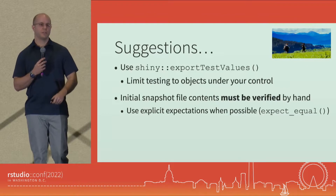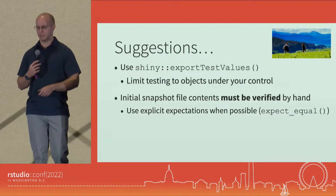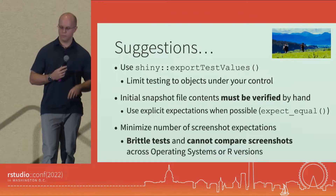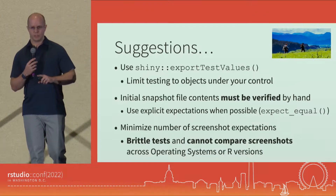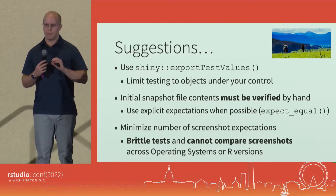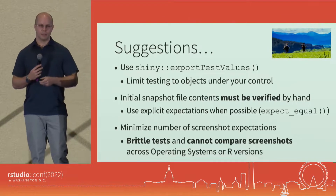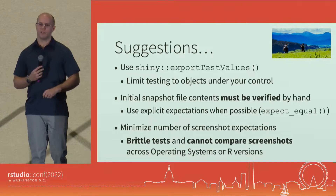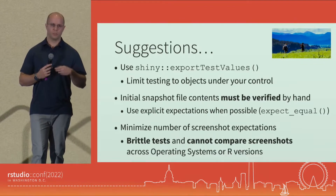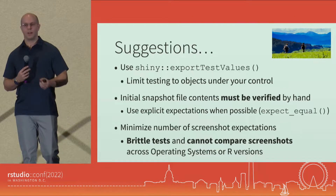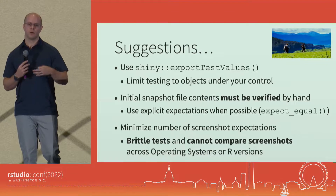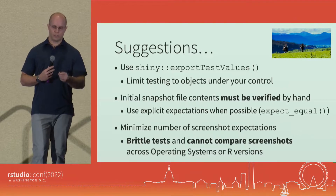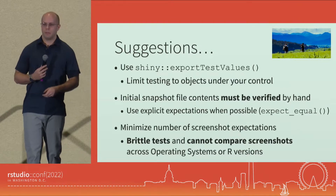To be safe, use manual or explicit expectations such as expect_equal, because comparing to a static value will always be truthful. And lastly, minimize the number of screenshot expectations. Screenshots are worth a thousand tests — they do test everything — but that means a very high false positive rate. They're very brittle, and you cannot compare across operating systems or R versions, making them unwieldy very quickly. Unless screenshots are absolutely necessary, I'd argue maybe don't use them.